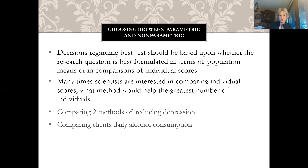You can choose between parametric and non-parametric depending on your question of interest. Your decision should be based on whether the research question is formulated in terms of population means or on individual scores. Many scientists are interested in comparing individual scores — for example, studies comparing two methods of reducing depression or comparing clients' daily use of alcohol.